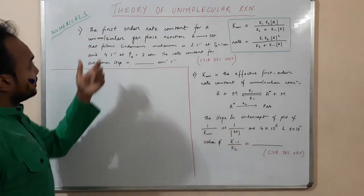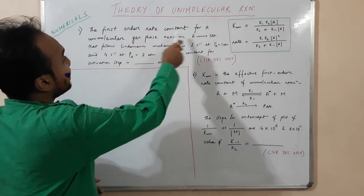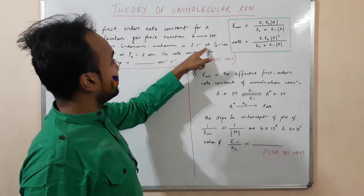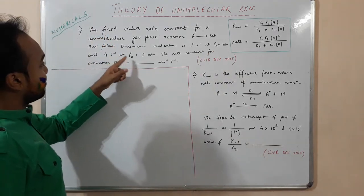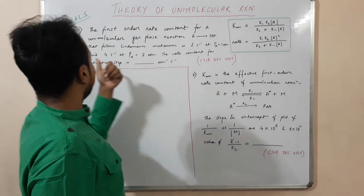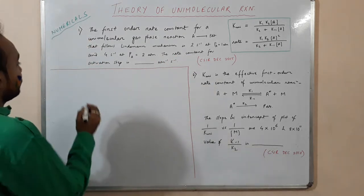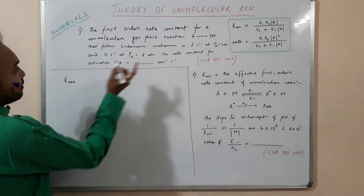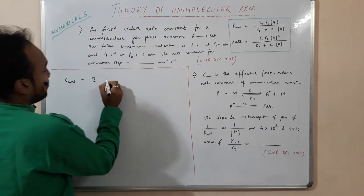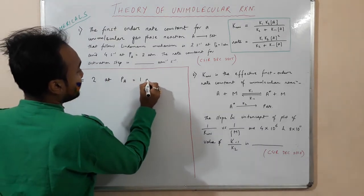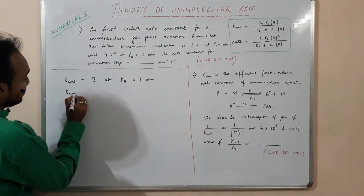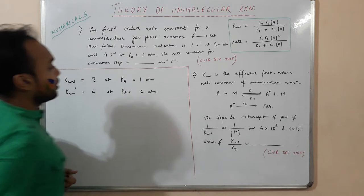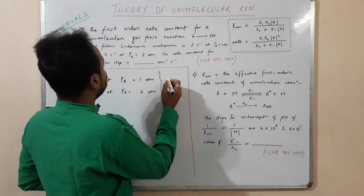In the first numerical, the first order rate constant for a unimolecular gas phase reaction A → products that follows the Lindemann mechanism is 2 s⁻¹ at a pressure of 1 atm, and 4 s⁻¹ at a pressure of 2 atm. We are given K_uni = 2 at P = 1 atm, and K_uni = 4 at P = 2 atm. We are asked to find the rate constant for the activation step, that is K₁.